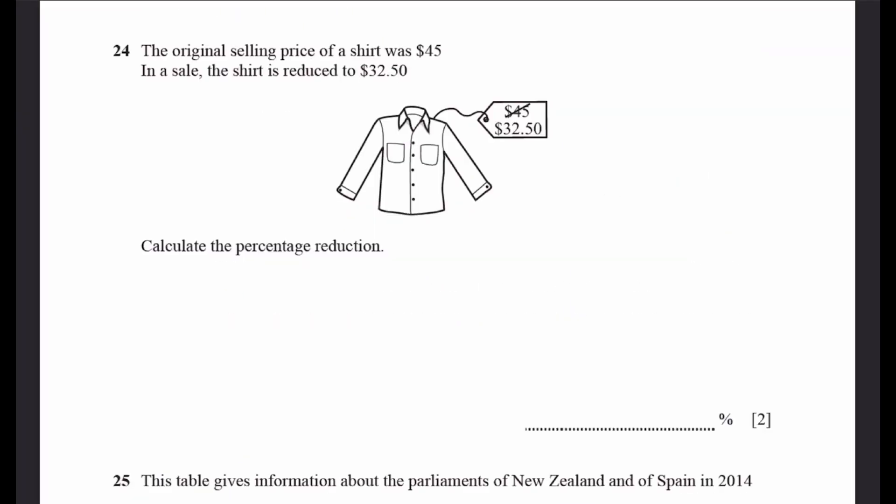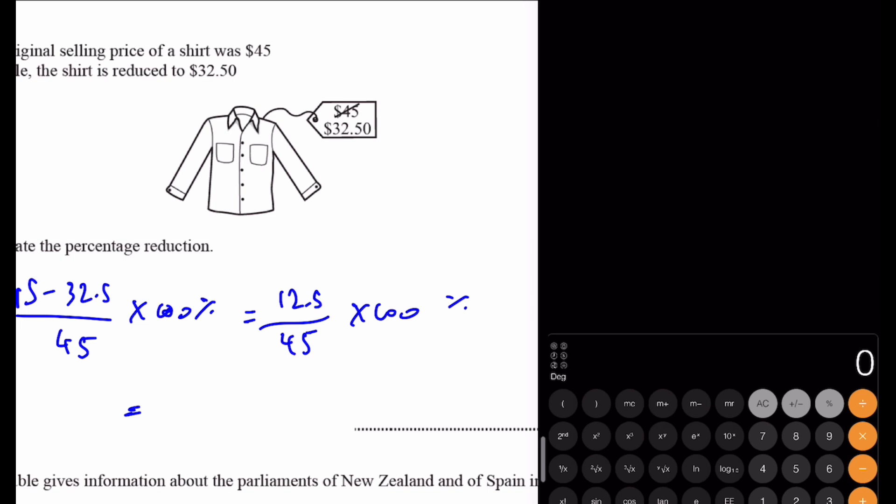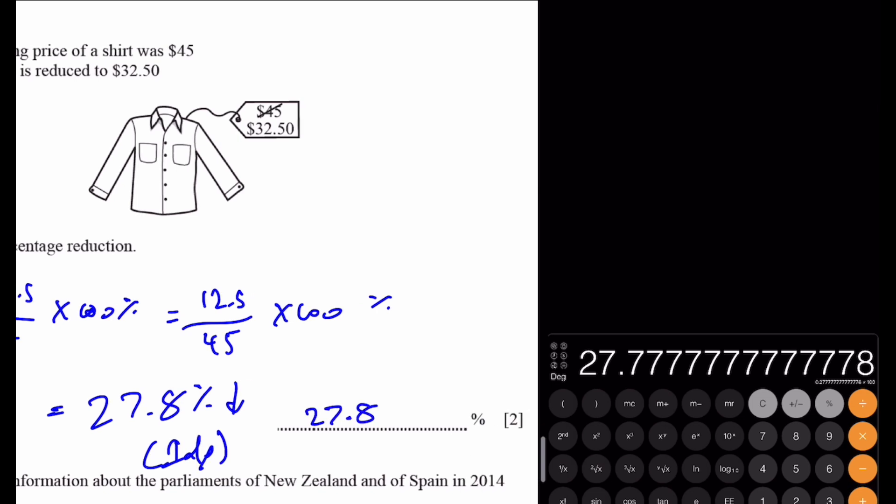Question 24. The original selling price of a shirt was $45. In the sale, the shirt's reduced to $32.50. Calculate the percentage reduction. That'll be 45 minus 32.5 by 45 multiplied by 100%. That'll be 12.5 by 45 into 100%. 12.5 divided by 45 multiplied by 100, which equals 27.8% decrease to 1 decimal place.